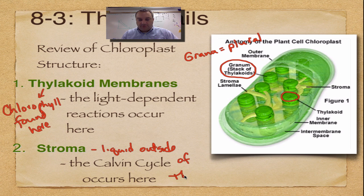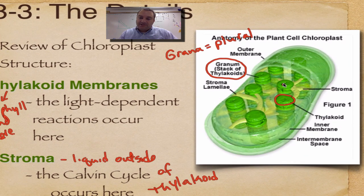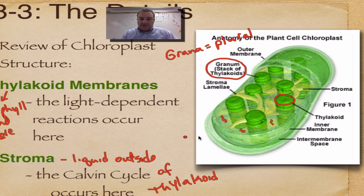So the stroma is a liquid outside of the thylakoids. Think of this as kind of like a water balloon that's got these stacks of poker chips inside of it, and then the area between these poker chips — that's the stroma. They have it labeled right over here.